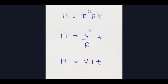The quantity of heat produced when current is passed through a conductor is directly proportional to the product of the square of the current, resistance, and time for which the current flows. That is Joule's law. Then H is equal to I squared RT. In this case, H is equal to V squared by R, that is H is equal to V squared by R into T.